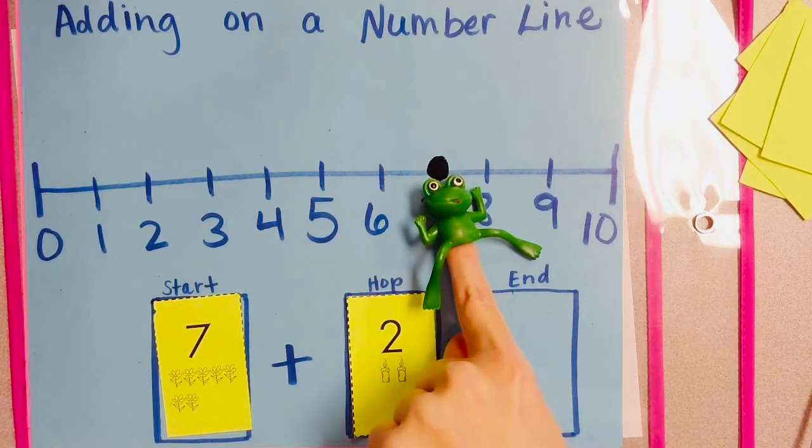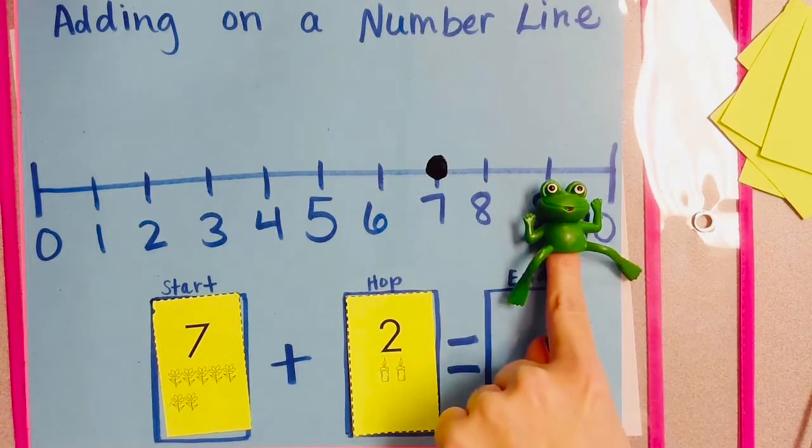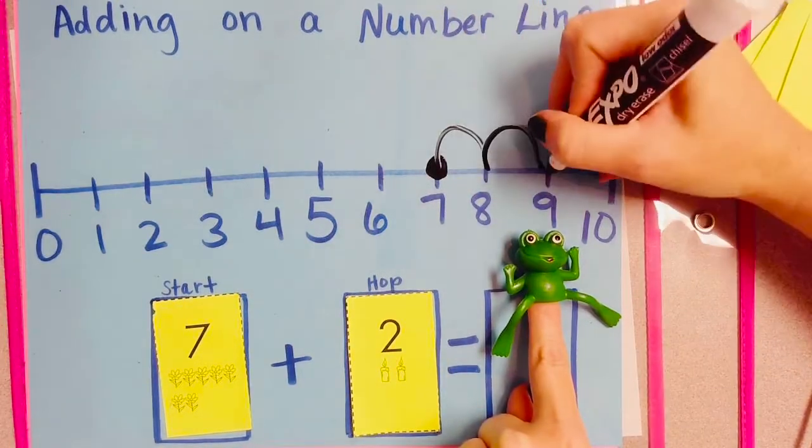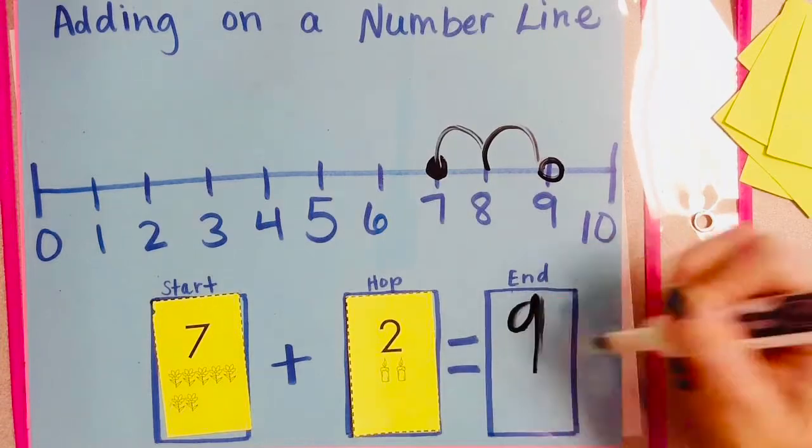Ready? One, two. What is our ending number? Nine. Seven plus two is nine.